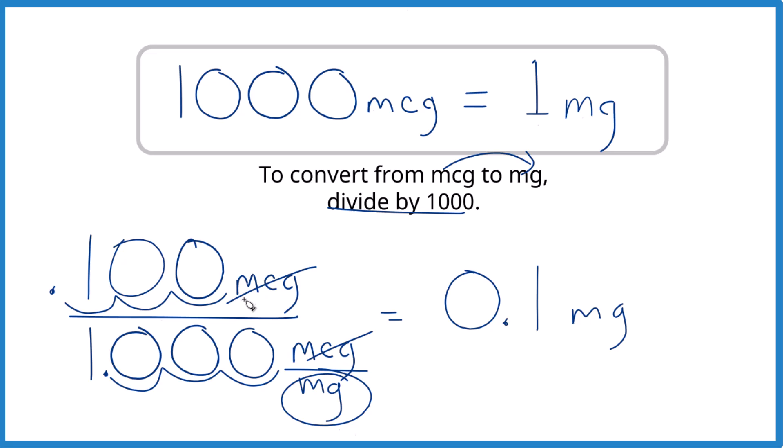So when we have 100 micrograms, we divide by 1,000, and we end up with 0.1 milligrams. This is Dr. B, and thanks for watching.